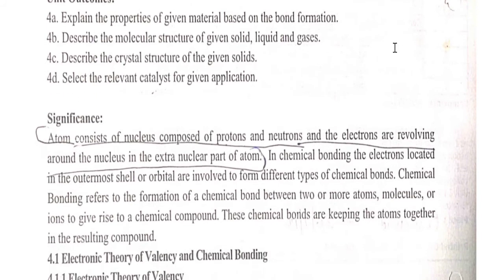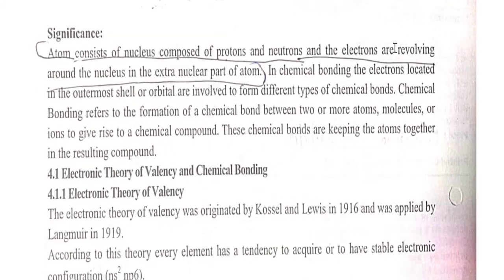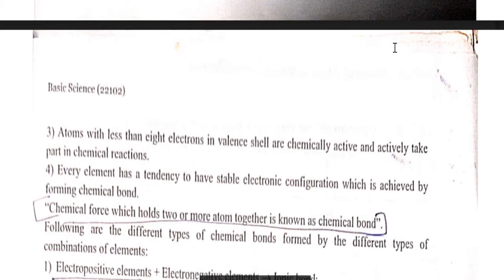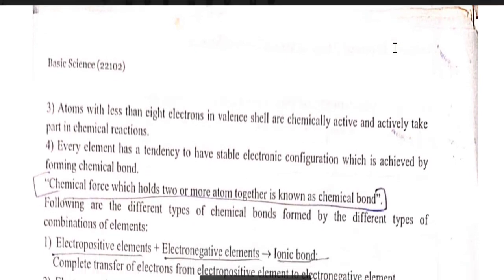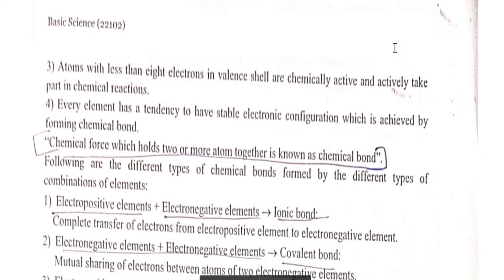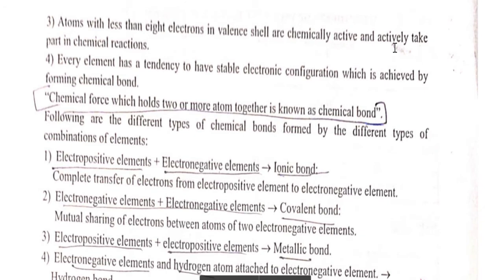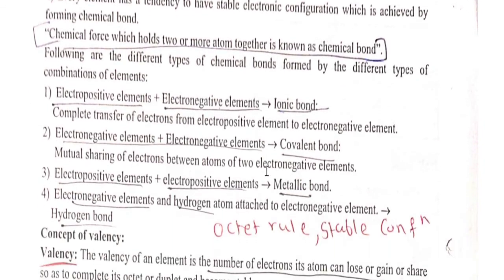An atom consists of a nucleus which is composed of protons and neutrons. A chemical force which holds two or more atoms together is known as a chemical bond. Types include: ionic bond, formed between electropositive and electronegative elements; covalent bond, formed between two electronegative or two electropositive elements; and hydrogen bond, formed between an electronegative atom — oxygen, nitrogen, or fluorine — and a hydrogen atom.